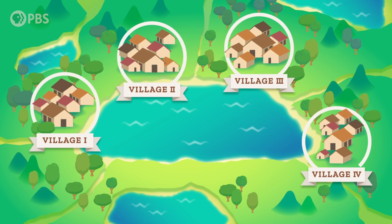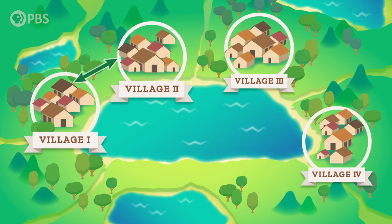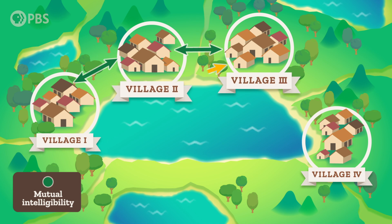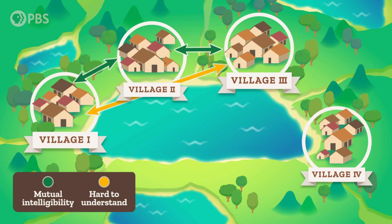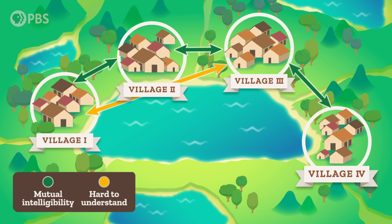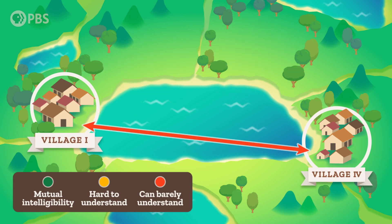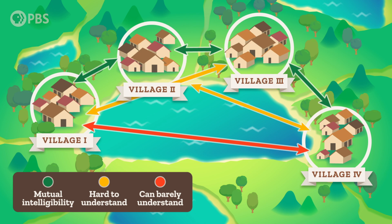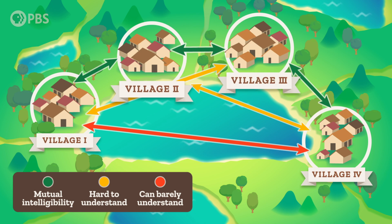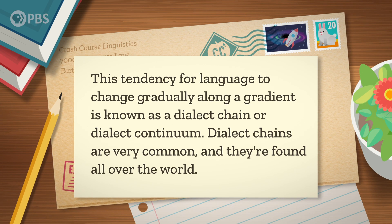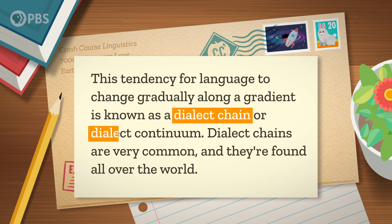Let's imagine a chain of four villages. The first village and the second village have different dialects but good mutual intelligibility. People in village 3 can understand people from village 2 pretty well, but they have a harder time with people from village 1, who are farther away. The fourth village can also understand people from village 3 pretty well, but they can barely understand people from village 1 at all. If we just look at villages 1 and 4, who can't understand each other, it feels like we should conclude they're not speaking the same language. But it's hard to know where to make a break, since adjacent villages are mutually intelligible to their neighbors. This tendency for language to change gradually along a gradient is known as a dialect chain or dialect continuum.